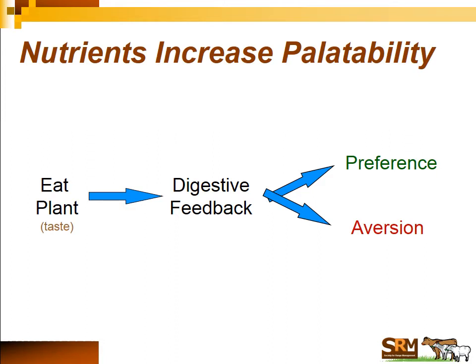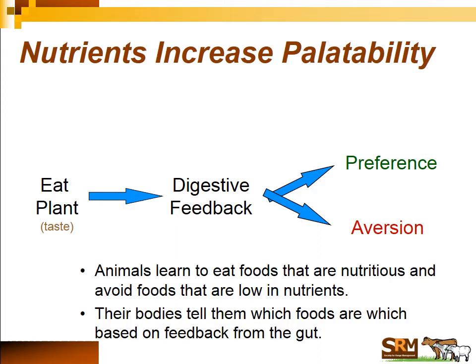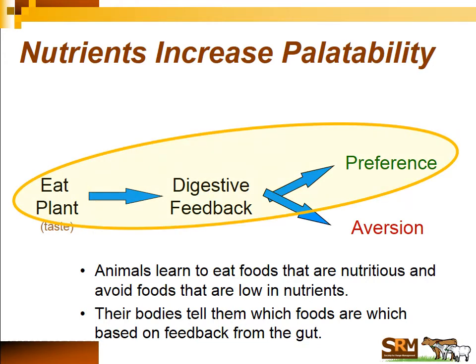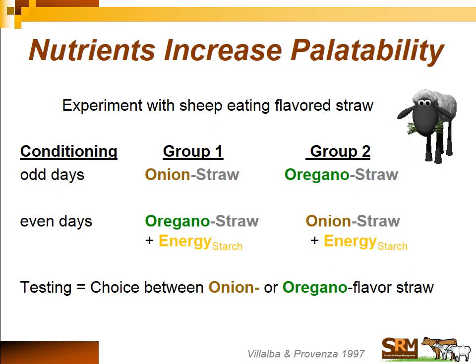Let's look more closely at how nutrients increase palatability of foods. Animals learn to eat foods that are nutritious and avoid foods of low nutrient content, and their bodies tell them which food is appropriate based on feedback from the gut. Here was a very interesting experiment done in the 90s by Juan Villalba and Fred Provenza at Utah State University — a simple experiment that showed beyond a shadow of a doubt that animals can relate nutrients to foods and form a strong preference for them.